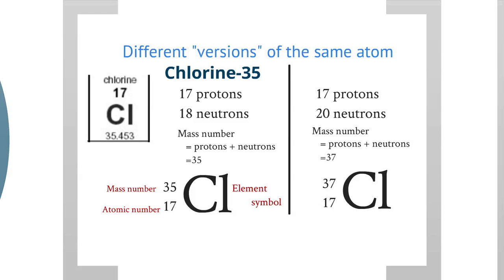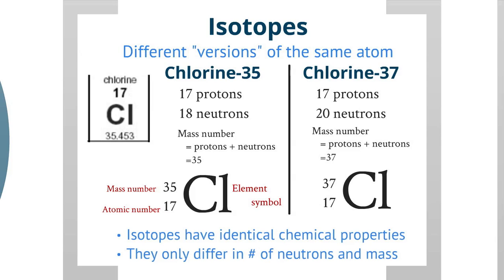So we have different versions of the same atom, chlorine-37 and chlorine-35, and these are called isotopes. An isotope is a different version of the same atom. Isotopes have identical chemical properties, so in chemical reactions chlorine-35 behaves just like chlorine-37. The only difference is in the number of neutrons: chlorine-35 has 18 neutrons, chlorine-37 has 20 neutrons, and because of this difference they differ in mass.